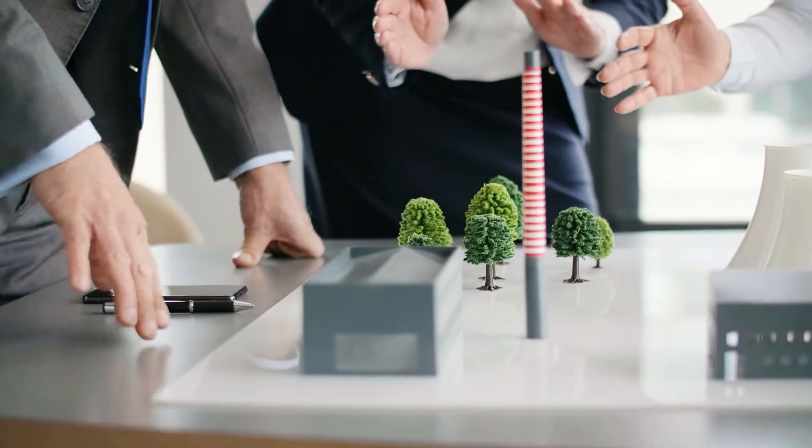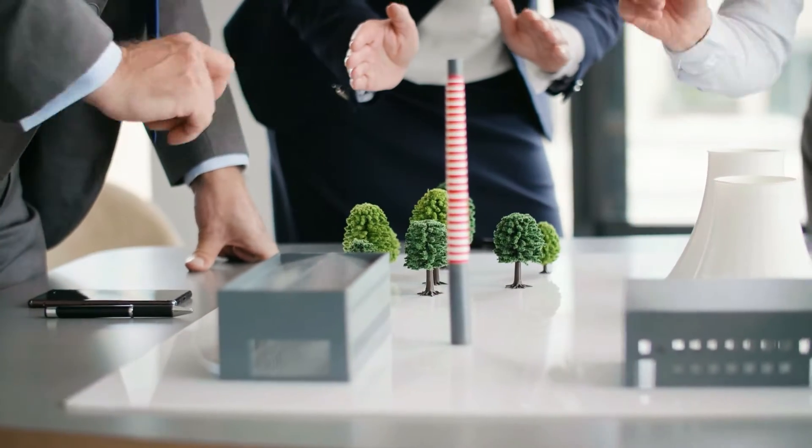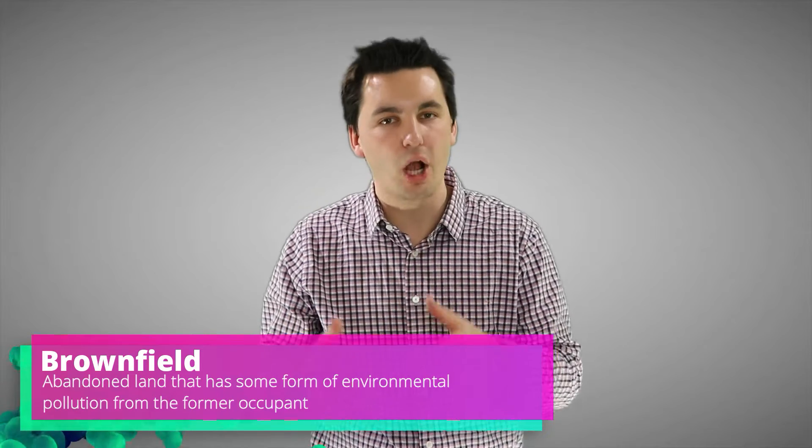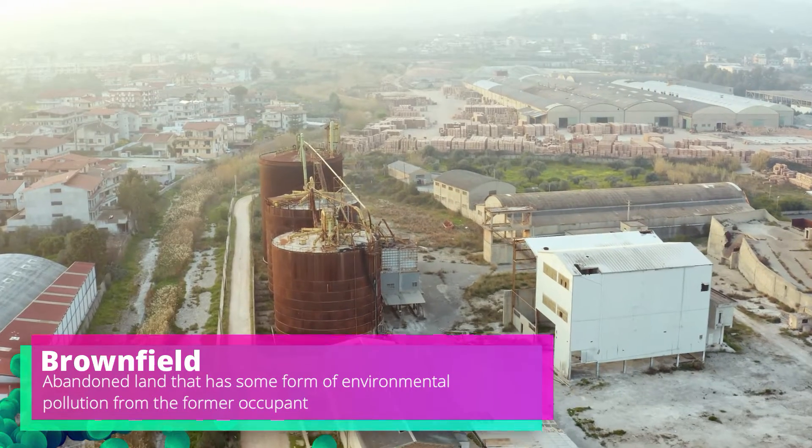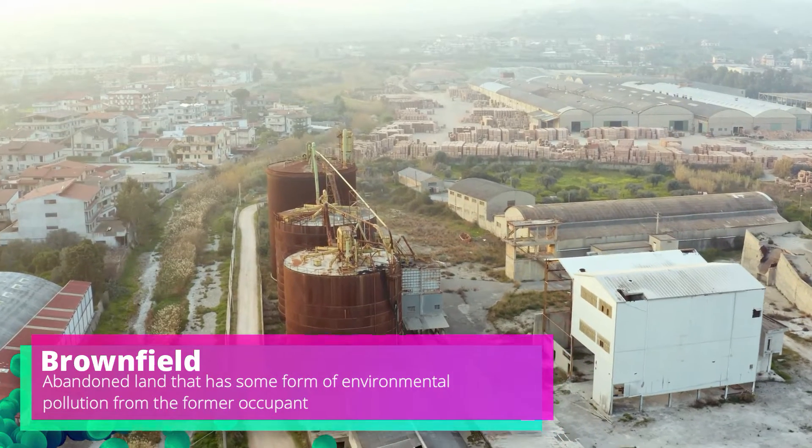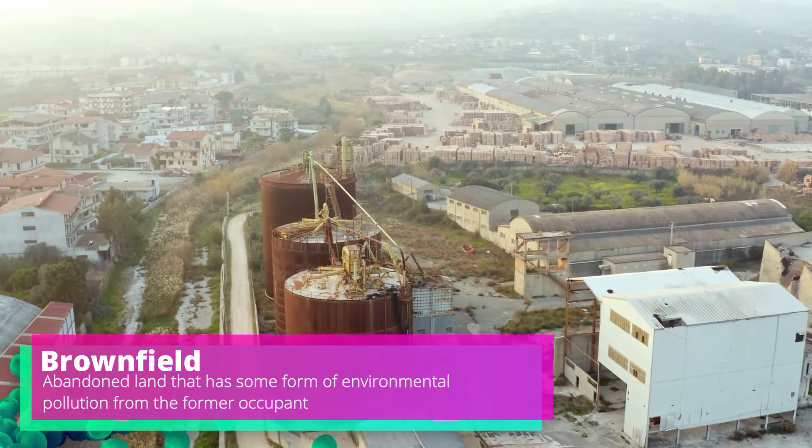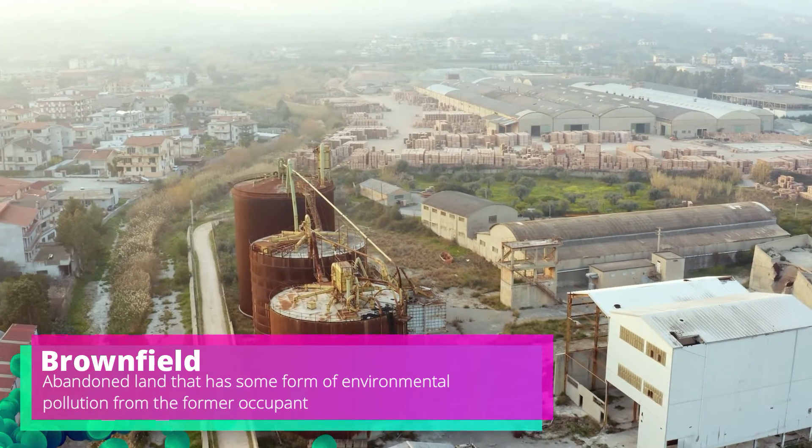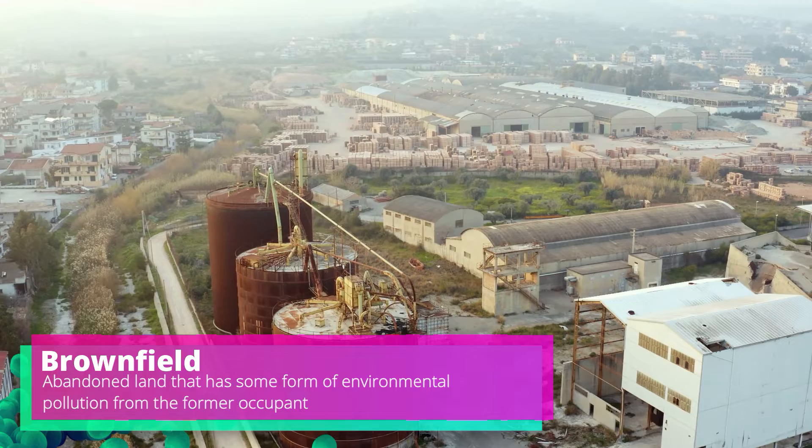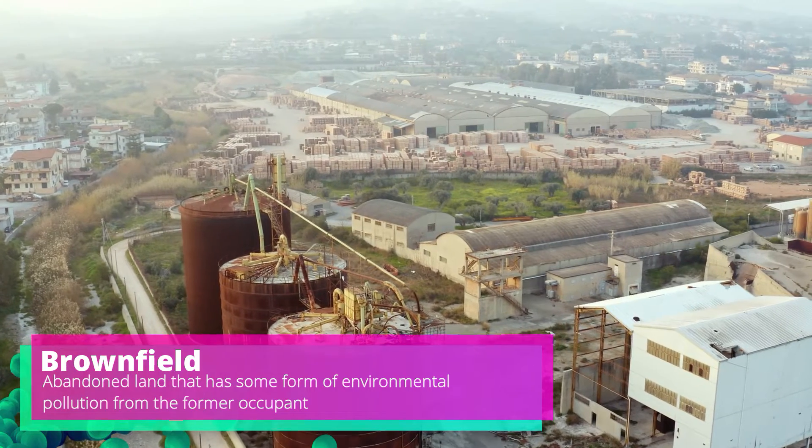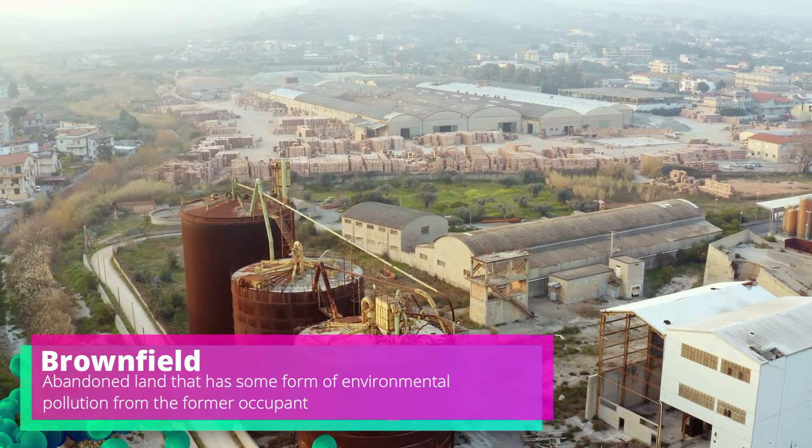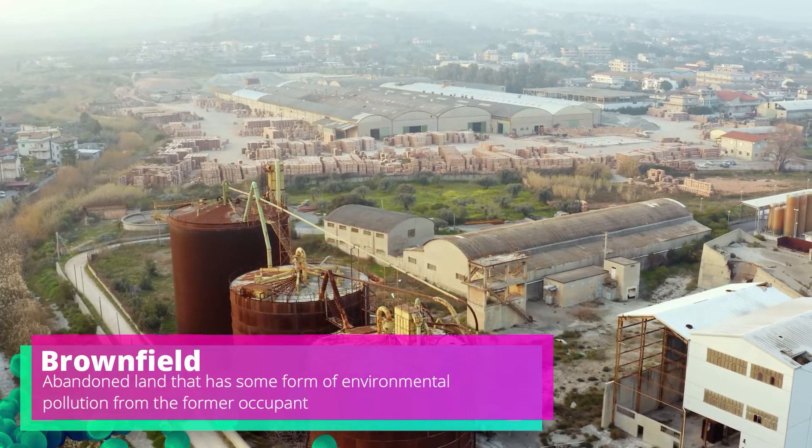Cities can also rezone and redevelop land that has been polluted and is no longer being used. For example, we could look at brownfields, which is land that's been abandoned and has been left polluted by the former occupants who used to reside there. Brownfields may have been used as industrial work, a former landfill, or even a gas station. Typically, the former occupant left the land contaminated, causing it to remain empty. Cities can work to redevelop this contaminated land and rezone it to create new communities in it, and better utilize their land space, and all the while creating a more environmentally sustainable city.